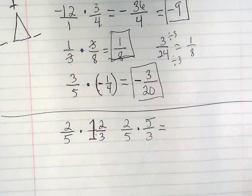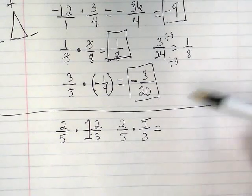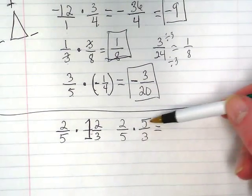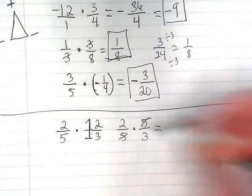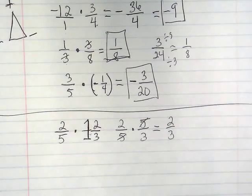I can multiply straight across, but what do you guys notice? We can simplify this before we multiply. We can cancel out those 5s. And that just leaves us with 2 thirds.